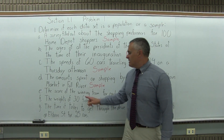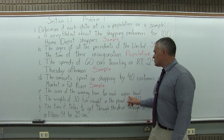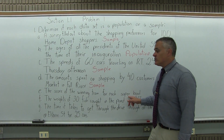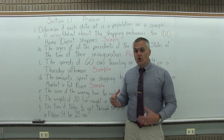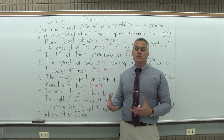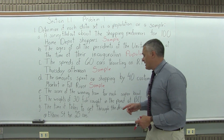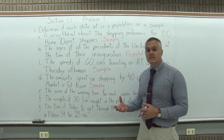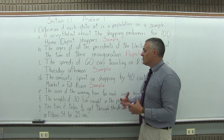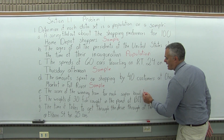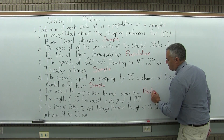Part E: the score of the winning team for each Super Bowl. There haven't been that many Super Bowls — you can look at all of them and see what the winning team's score was. You would be looking at the entire group that you're interested in studying, so part E is a population. You're looking at the entire group that you want to study.